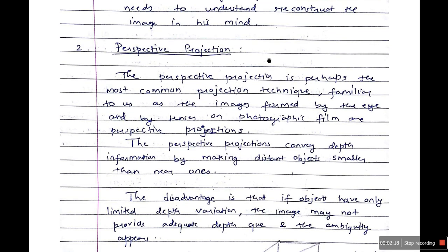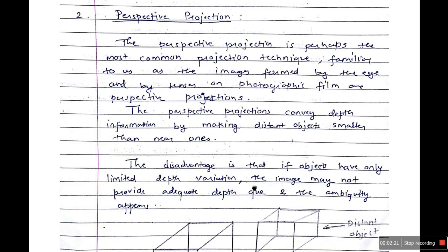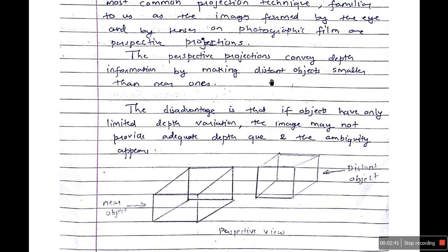Now let's take a look at another technique: perspective projection. Perspective projection is perhaps the most common projection technique familiar to us as images formed by eye or lenses of photographic film are perspective projections. Basically, what you see in real life is perspective projection. The perspective projection conveys depth information by making distant objects look smaller than the near ones. Suppose you place two glasses of water, one near you and one just far away. When you look at it from front view, the glass that is near to you looks larger than the glass that is far away.